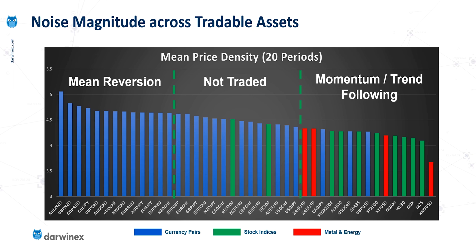There is another approach that I tend to call instantaneous noise. This is where we still trade a wide range of assets, but we look for the times when the noise is low in that asset for trend-following systems, or high for mean reversion systems. There are two approaches there, and I'll be covering the effectiveness of both of those in future episodes.